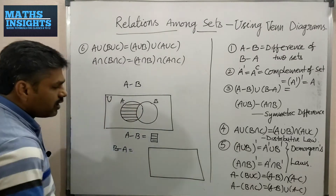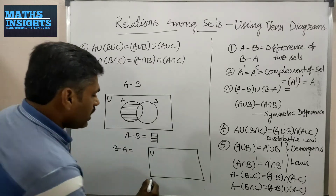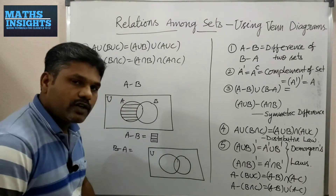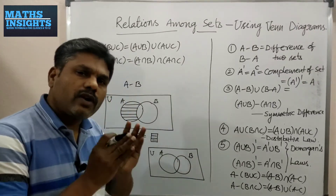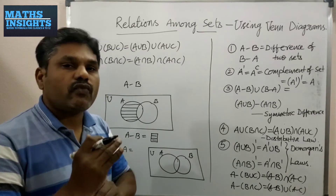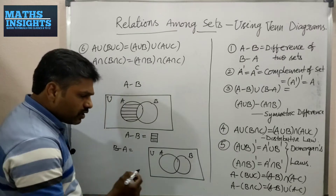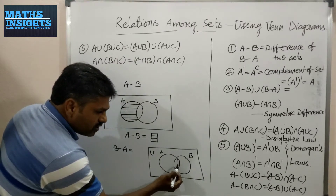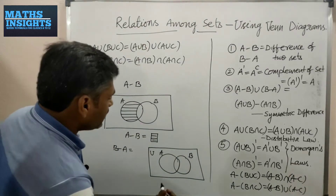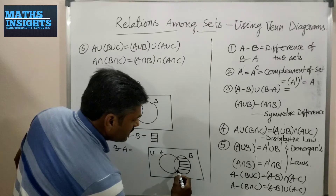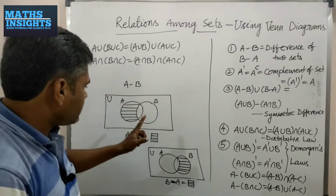For B minus A, similarly you have to draw a universal set using a rectangle with label U, and draw two sets A and B using two circles. B minus A means from B you have to subtract the area of A. In the set B you have some portion of A — that portion should be subtracted. The remaining area shows the set B minus A.